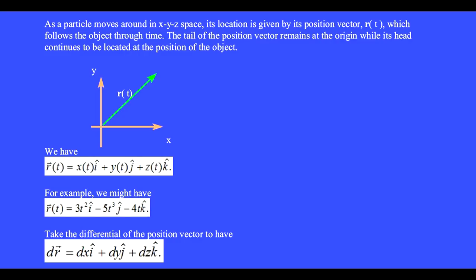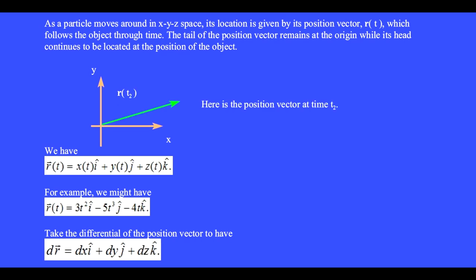As a particle moves around in XYZ space, its location is given by its position vector R, which follows the object through time. The tail of the position vector remains at the origin, while its head continues to be located at the position of the object. We have the position vector R equals x plus y plus z.